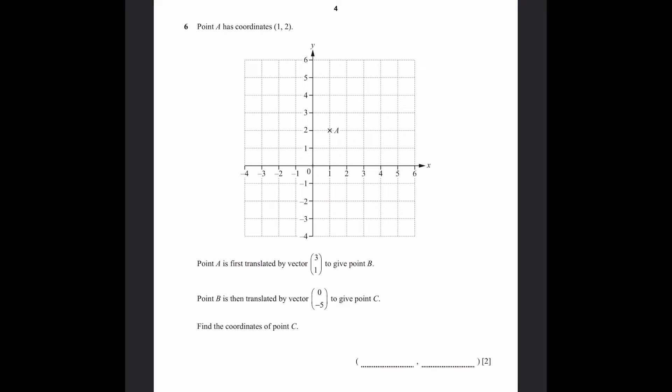Question 6. Point A has coordinates 1, 2. Point A is first translated by vector 3, 1 to give point B, then translated by vector 0, minus 5 to give point C. We have to find the coordinates of point C. Vector 3, 1 means 3 units to the right and 1 unit up. Point B is 4, 3. Now, translating by vector 0, minus 5, that means we simply go 5 units downwards. That gets us to point C, which is 4, minus 2.